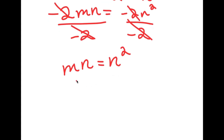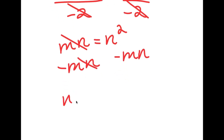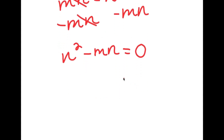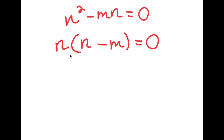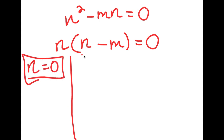From here, I'm going to subtract mn on both sides, so these two cancel out, and I get n squared minus mn is equal to 0. The greatest common factor in n squared minus mn is n, so if I factor out n, I get n times n minus m is equal to 0. This gives me two equations: n is equal to 0, and n minus m is equal to 0.